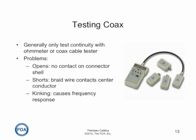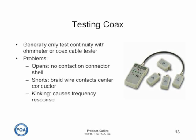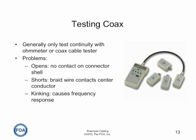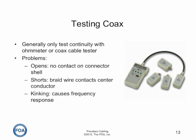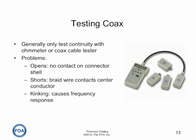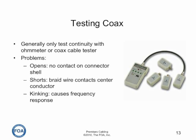You generally only test the continuity of a coax connector with an ohmmeter or a special coax cable tester. The typical problems are opens, where there's no contact on the connector shell from the braid; shorts, where wire braids contact the center conductor; or kinking.